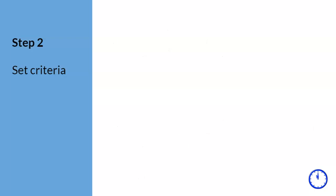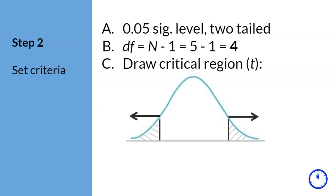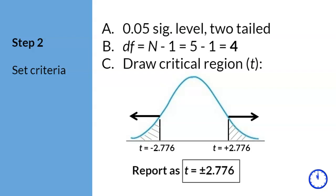Step 2. As a researcher, we get to decide the significance level, and the preferred one is 0.05. Second, we calculate degrees of freedom, which is 4. Since we do not know if Medication Z will increase or decrease anxiety, we need to draw a critical region for both tails — above and below the mean. The corresponding t-scores for a 0.05 significance level with 4 degrees of freedom are t plus or minus 2.776. Because the t-table provides scores to three decimal places, you may keep the answer to three decimal places.